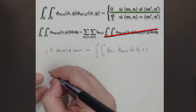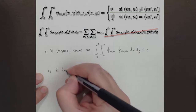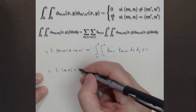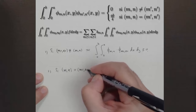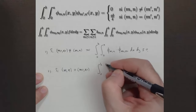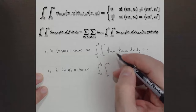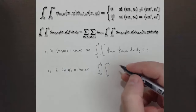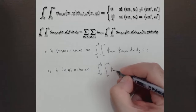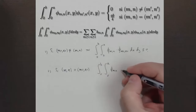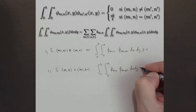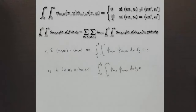El segundo caso es que no va a haber sino un solo término de la suma que va a sobrevivir, que es cuando MN sea precisamente igual a M0N0. En este caso, el término que tenemos, la integral de Phi MN por Phi MN entre 0 y A y entre 0 y B, va a ser, por las relaciones de ortogonalidad, A por B sobre 4.